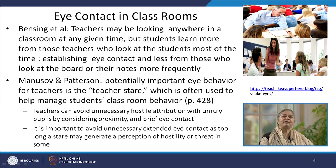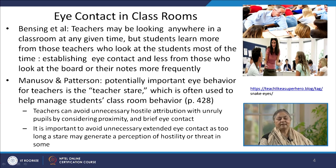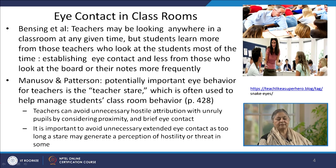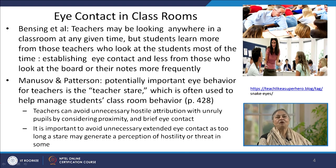At the same time, we find that we can avoid unnecessary hostile attribution with unruly pupils by considering proximity as well as brief eye contact with them. However, it is important that we avoid unnecessarily extended eye contact with a particular person, as too long a stare may generate a perception of hostility or threat, or may make the person unnecessarily defensive.